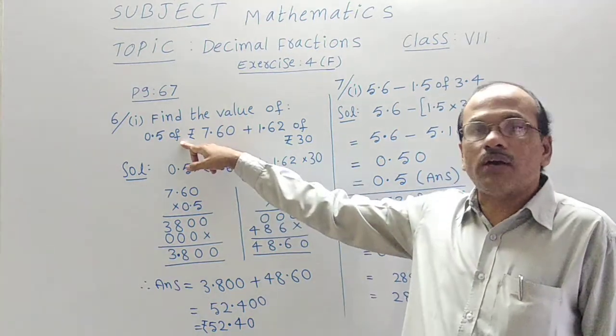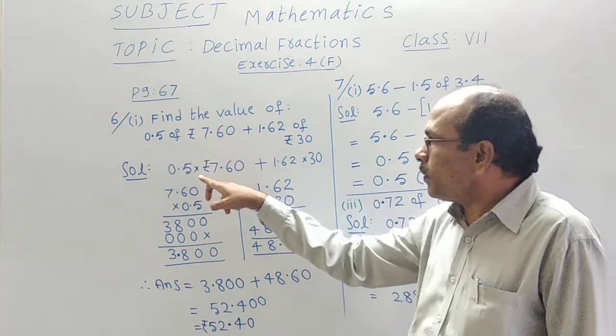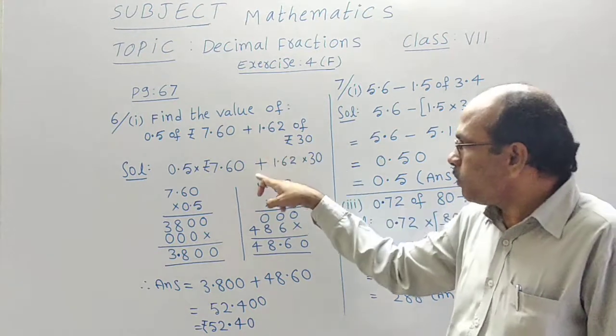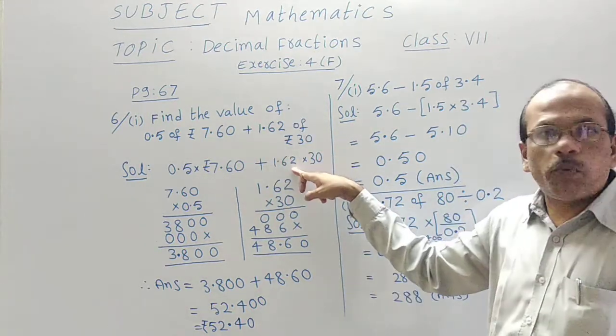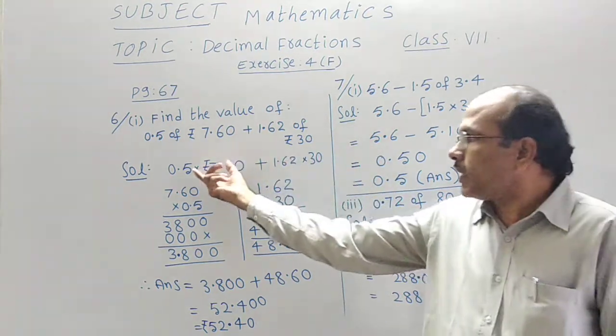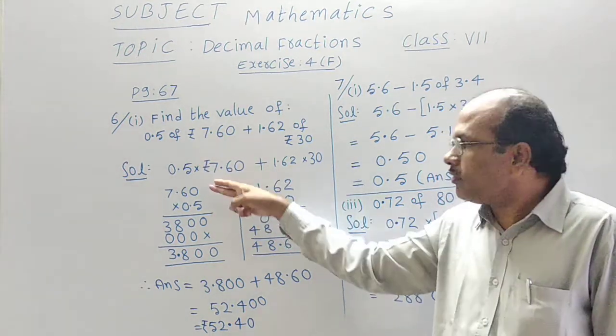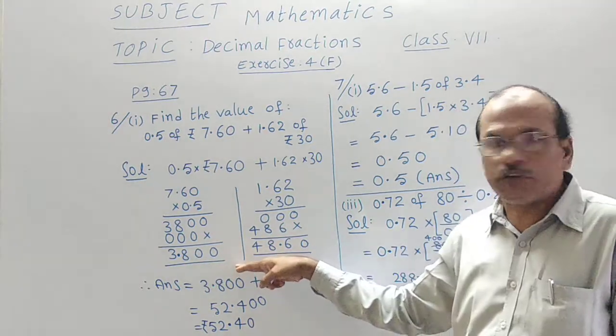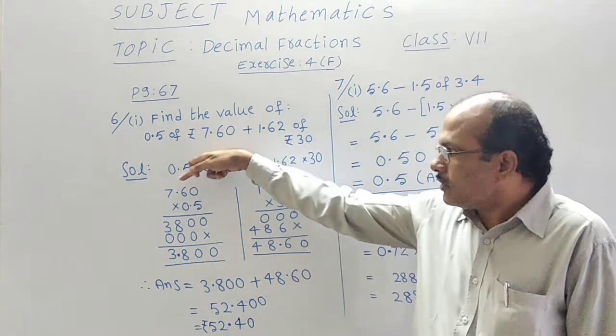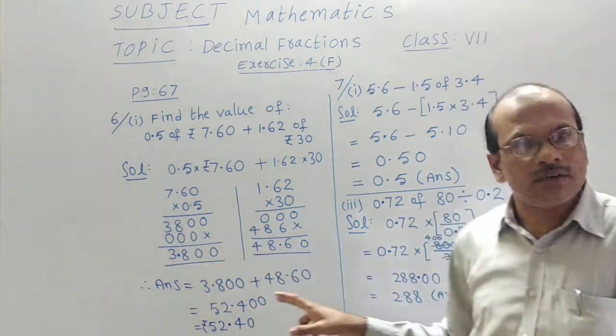Here, of half means multiplication. 0.5 should multiply with 7.60 plus 1.62 should multiply with 30. So here multiplication, here also multiplication. 7.60 and 0.5 we have multiplied like an ordinary multiplication. We got an answer. Your point is after 1 digit, your point is after 2 digits. So I have arranged a point after 3 digits.